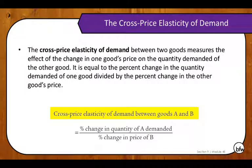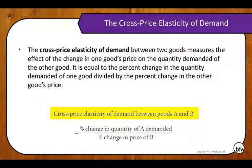Remember that demand for good A shifts when the price of a related good changes — we learned that when we looked at shifts of the demand curve in the last unit. This elasticity measures how much that demand curve shifts. Numerically, the formula for products A and B is the percent change in quantity demanded of good A divided by the percent change in the price of good B.